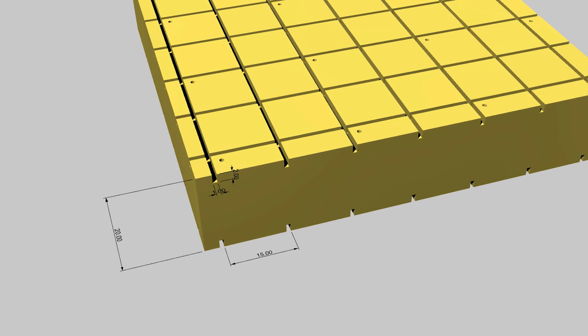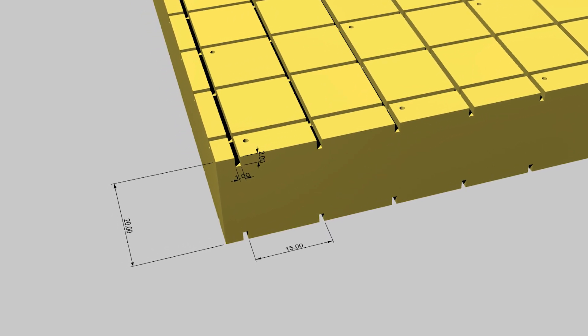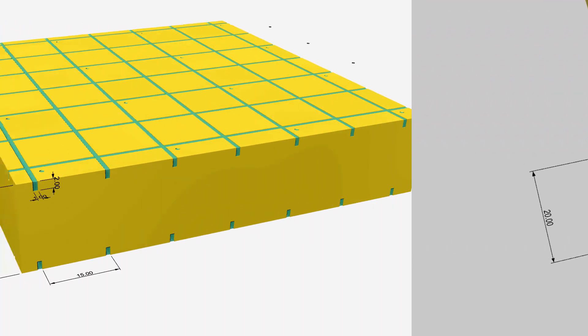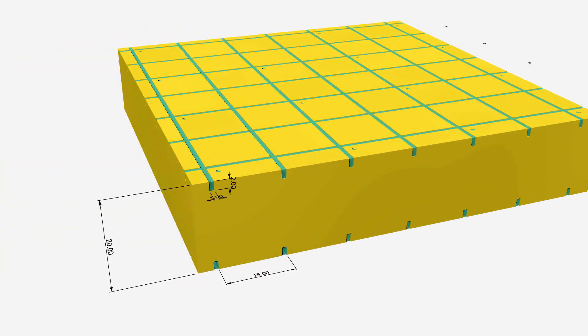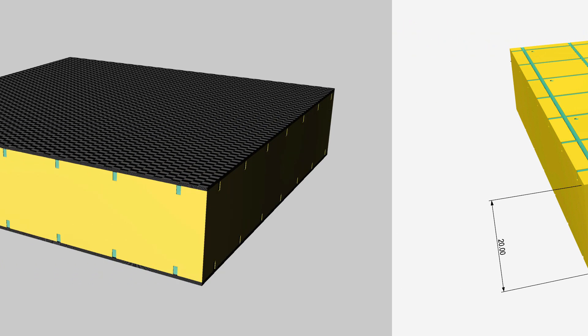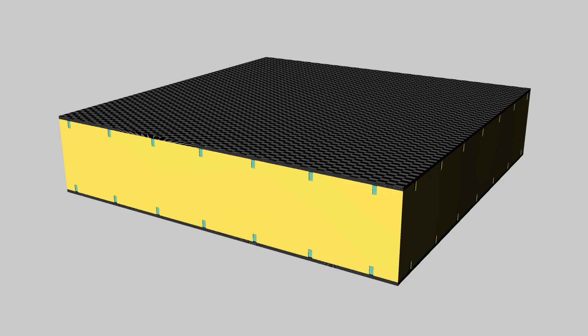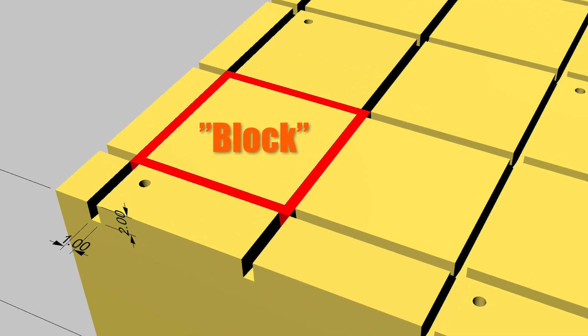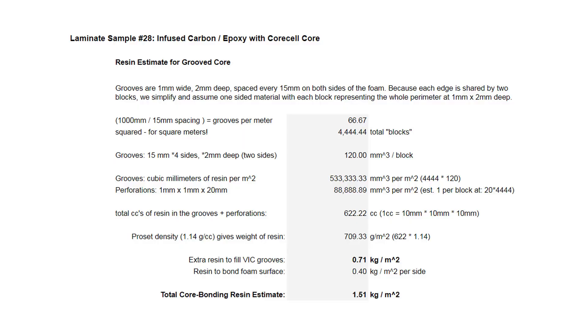And here's a model showing the dimensions of the grooves, they're 2mm deep, 1mm wide roughly on 15mm centers. To estimate the resin volume, because it's on both sides, I'm just going to use a simplified block. Here's a quick look at the estimate, and it gives about 0.7kg.